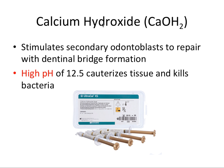The first material is calcium hydroxide, which we've talked about in previous videos. Calcium hydroxide stimulates secondary odontoblasts to repair with dentinal bridge formation. From our very first video we talked about undifferentiated mesenchymal cells — they can become different cells depending on what they're asked to do, kind of like stem cells. Calcium hydroxide stimulates those cells to become secondary odontoblasts, which form tertiary dentin — a dentinal bridge that protects the pulp. It does so by having a very high pH of around 12.5, which cauterizes tissue, irritates cells, and kills bacteria.